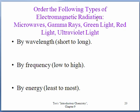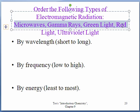Okay, so go ahead and pause this slide and go ahead and order these different types of electromagnetic radiation, looking back at the spectrum in your textbook, from by wavelength, short to long, by frequency, low frequency to high frequency, and by energy, least amount of energy to most.